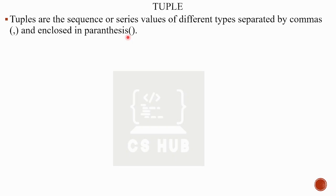We can clearly identify the difference between a tuple and a list. In a list, elements are separated by commas and enclosed in square brackets. In a tuple, they are enclosed in parentheses — round brackets, also called C brackets or curved brackets.